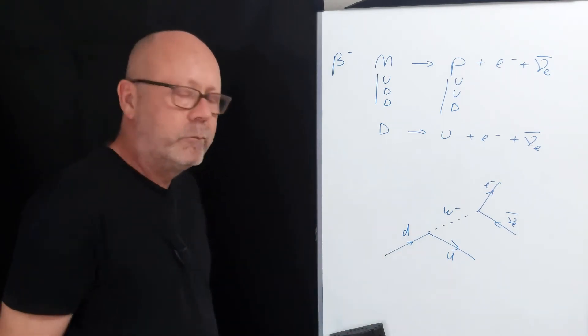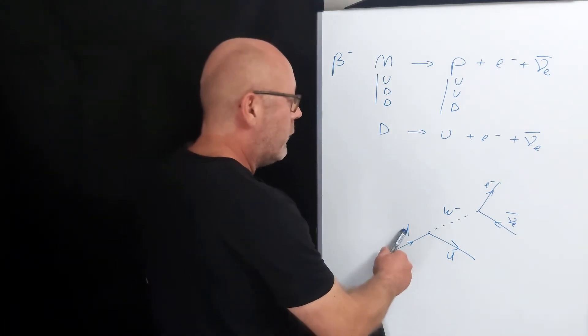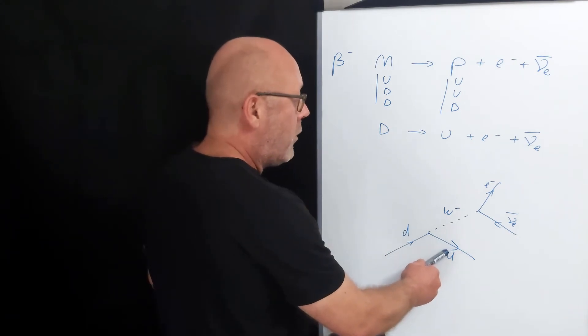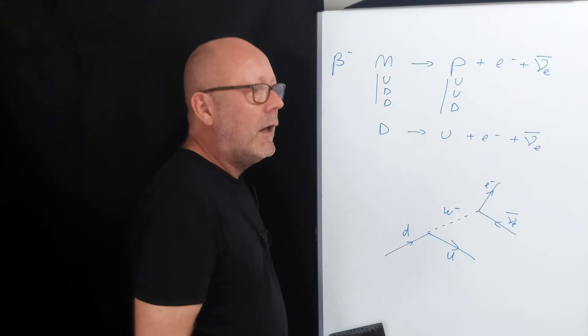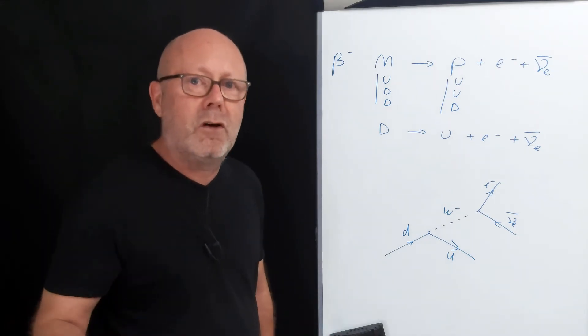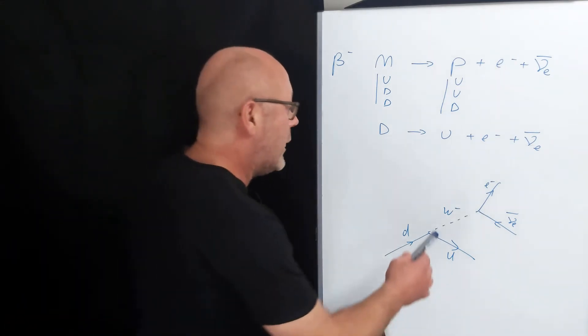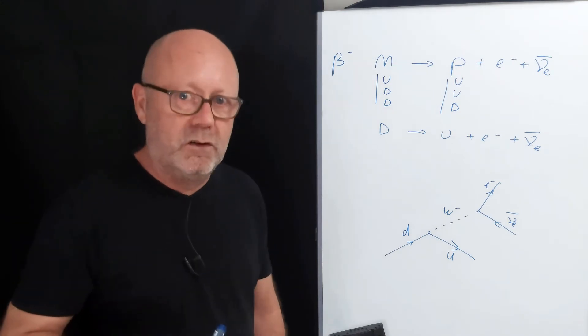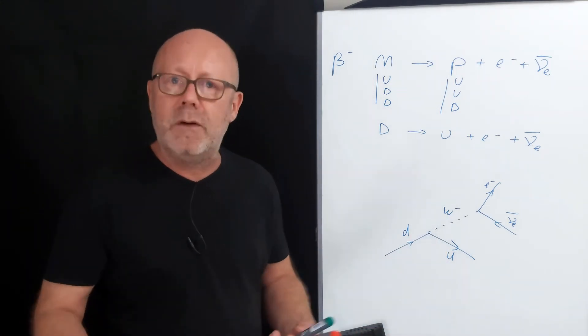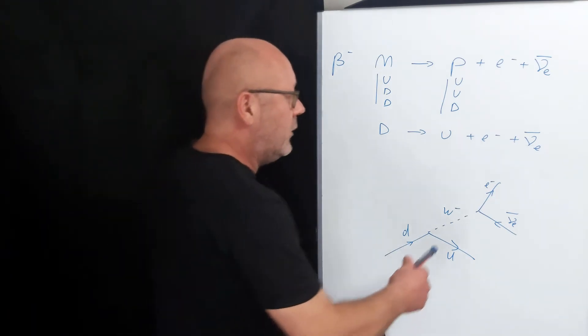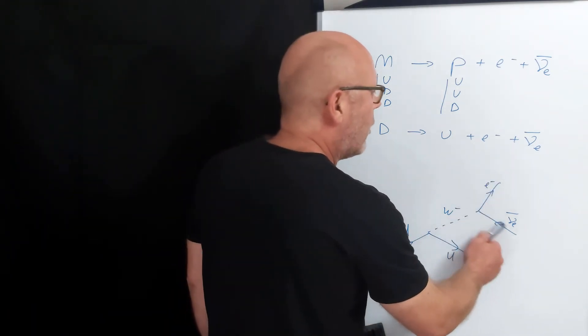What do we see here? We see a down quark that transforms into an up quark, while it spits a W- boson. A W- boson is a boson of the weak force, so we know now that it is a weak force which is involved. But a W- boson is very heavy, so it is also very unstable, and soon decays into an electron and an anti-neutrino.